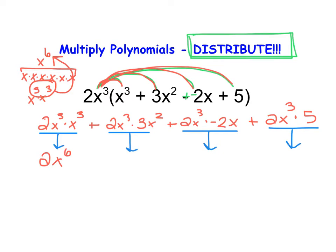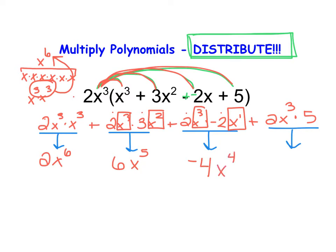Looking at the next term, I have 2 times 3 which gives me 6, and then x to the 3rd times x squared. Using the same pattern, I simply add those exponents together to give me x to the 5th. This next one, I have 2 times negative 2 which is negative 4, and then x to the 3rd times x to the 1st — using the add-the-exponents trick to get x to the 4th. And finally, 2 times 5 is 10, and then I have x to the 3rd left over.